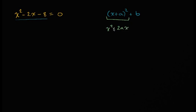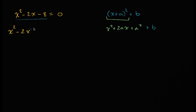x squared plus 2x plus a squared. Now, plus b. Now, x squared minus 2x. Now, we are going to write 3x squared minus 2x. Here, minus 8, b.